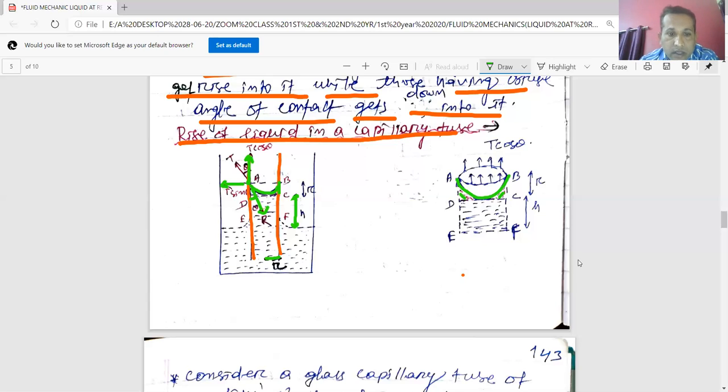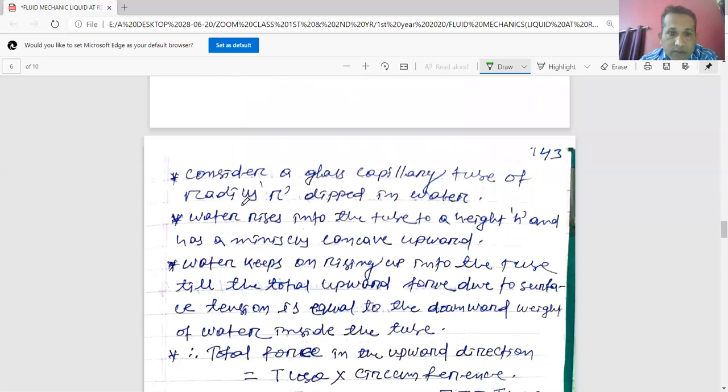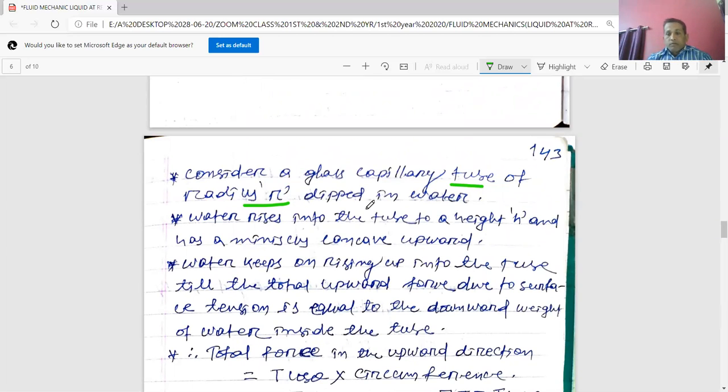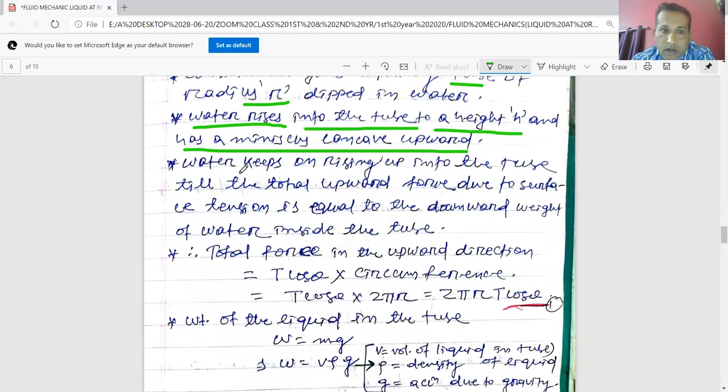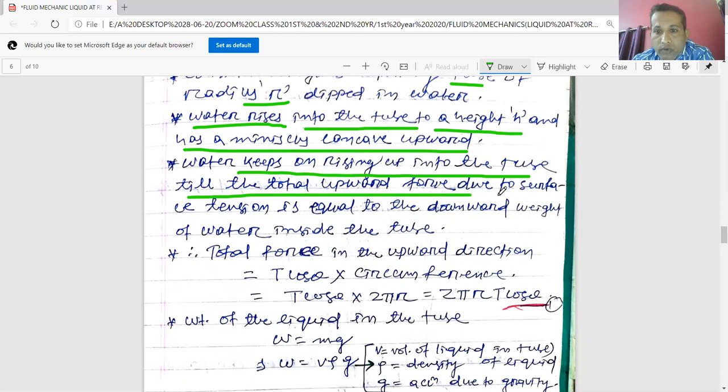So now consider a glass capillary tube of radius r which is dipped in water. So water rises into the tube to a height h and has a meniscus concave upward. Water keeps on rising into the tube till the total upward force due to surface tension is equal to the total downward force due to weight of water inside the tube.